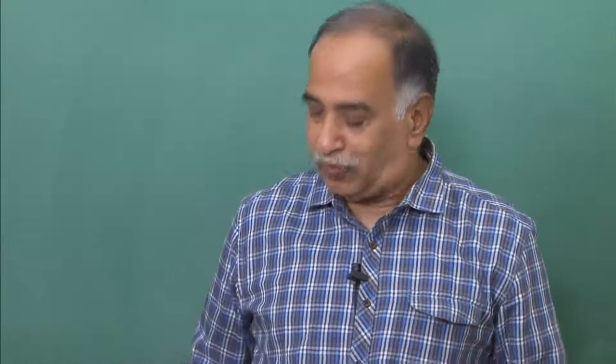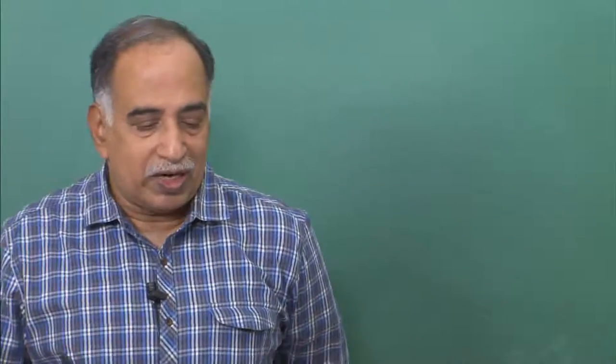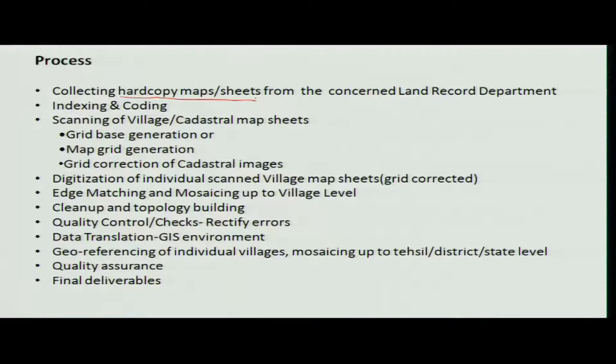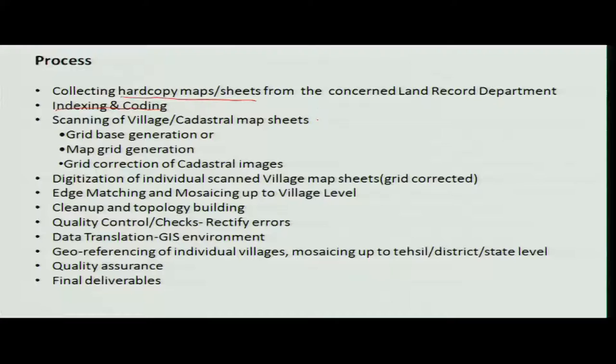What we have is a GIS database on cadastral maps and related georeferenced information. The process involves hard copy maps and sheets — existing maps — which you index and code. Indexing means joining them together to get an overall picture of the entire area. Then you scan the maps and apply grid correction. There are two ways: georeferencing, or a grid-based approach added onto the system.